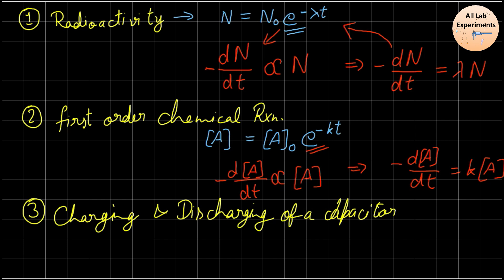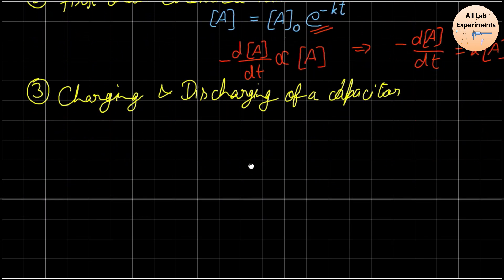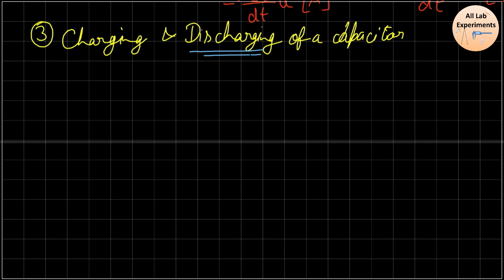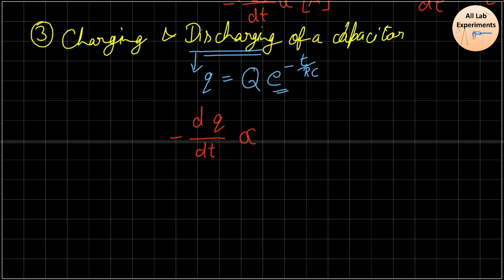The most interesting case is charging and discharging of a capacitor. Let us start with discharging: the charge on a capacitor is Q, and at time t=0 the charge is maximum, then it decreases as e^(-t/RC). When you apply Kirchhoff's voltage law to a simple capacitor circuit, you find that the decrease in charge on the capacitor plates is proportional to the charge itself: -dQ/dt = Q/RC.